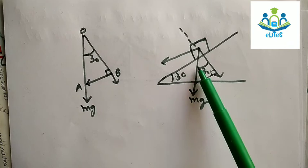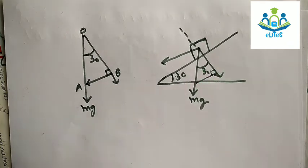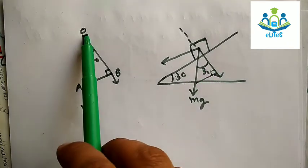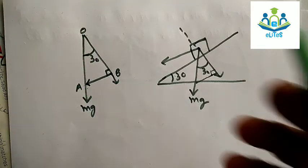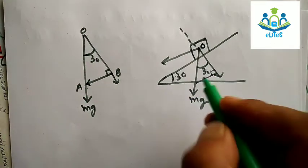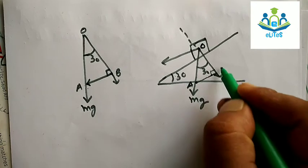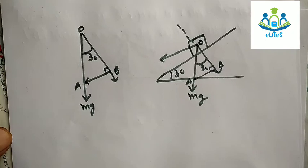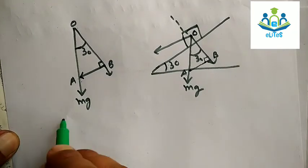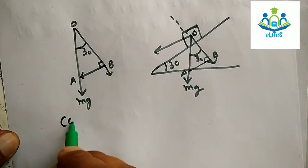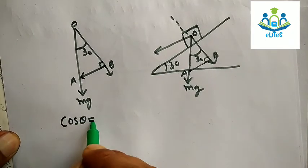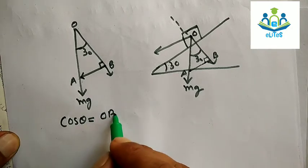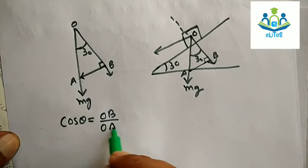If this angle is 30 degrees, we draw perpendicular to the plane. Suppose this is point A, here is A, and this is B. So triangle OAB has a right angle at B. Then we apply cos theta: cos theta equals base OB over hypotenuse OA.